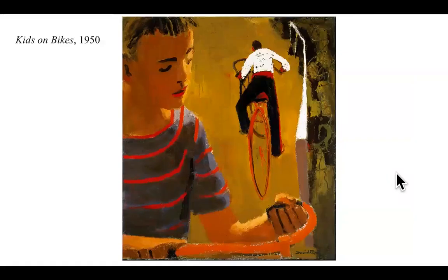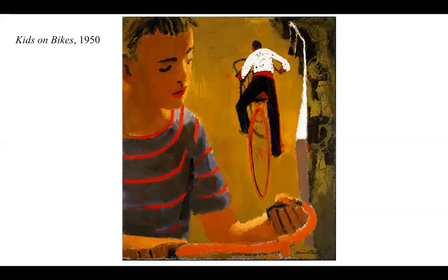The first work that came out was called 'Kids on Bikes' from 1950. In 1949 he threw his work away, and in 1950 he entered this painting into a Bay Area competition — and it won. It was considered very fresh and novel. People didn't realize they wanted the figure; they didn't want all abstract. This painting gave them something different.